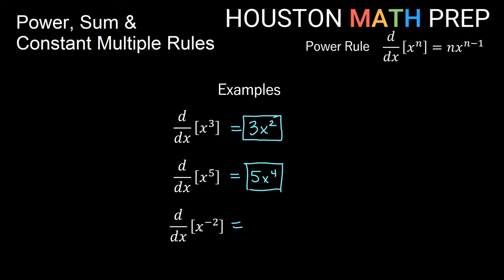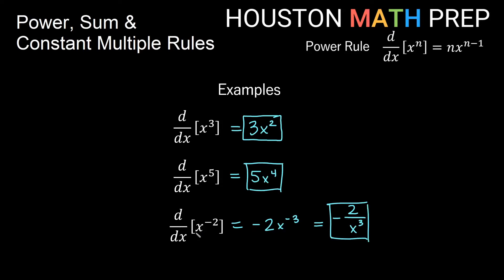For x to the negative two, the negative two comes out front, and subtracting one from negative two gives negative three, so we get negative 2x to the minus three. Remember, negative powers of x are reciprocals, so another way to write this without a negative exponent is negative two over x cubed.